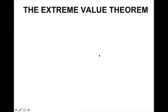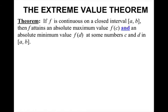This leads into what we call the Extreme Value Theorem. This says that if f is continuous on a closed interval from a to b, then f attains an absolute maximum value f of c and an absolute minimum value f of d at some numbers c and d in the interval a to b. All this means is that if you have a continuous function on a closed interval, there has to be a highest point and a lowest point.